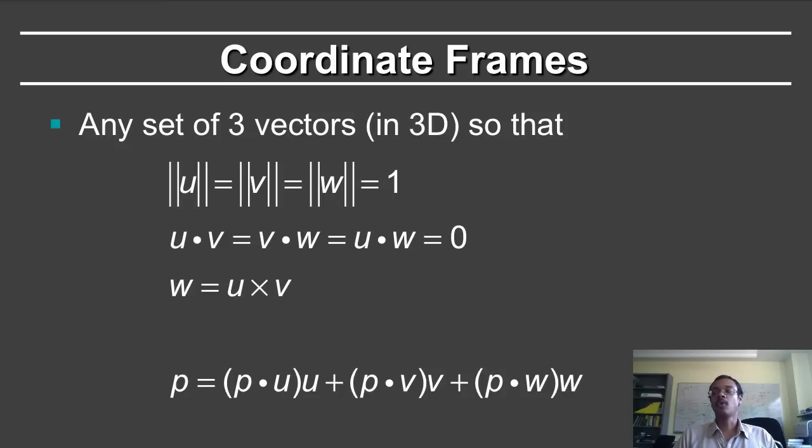So what is a coordinate frame? It's any set of three vectors in three dimensions, such that the vectors are of unit norm, such that the vectors are mutually orthogonal to each other, and such that they obey this cross product relationship, which is that w is equal to u cross v.